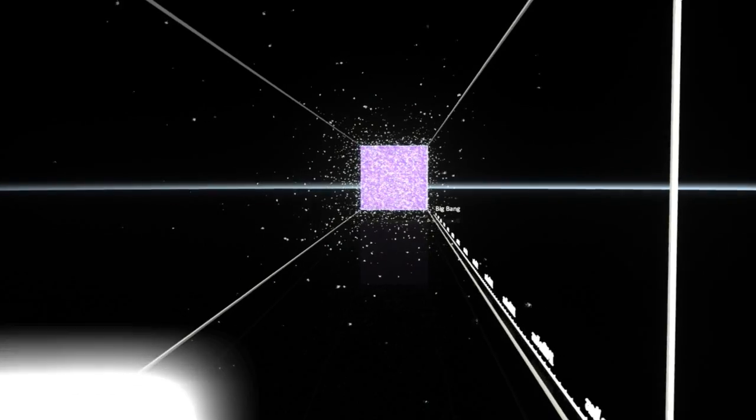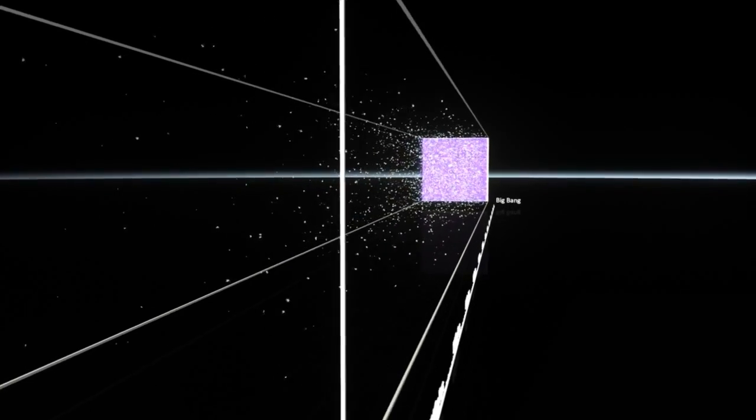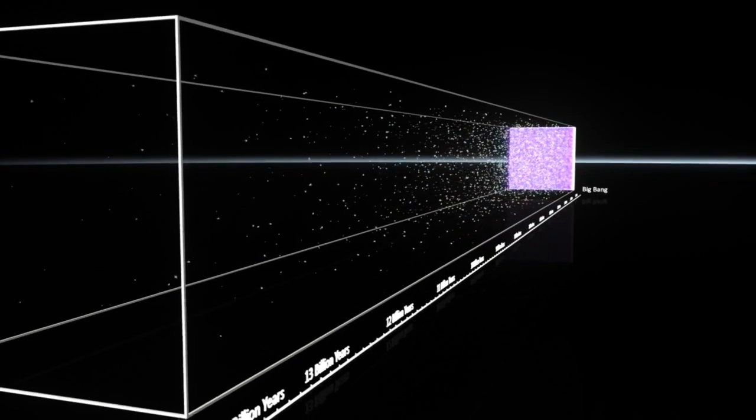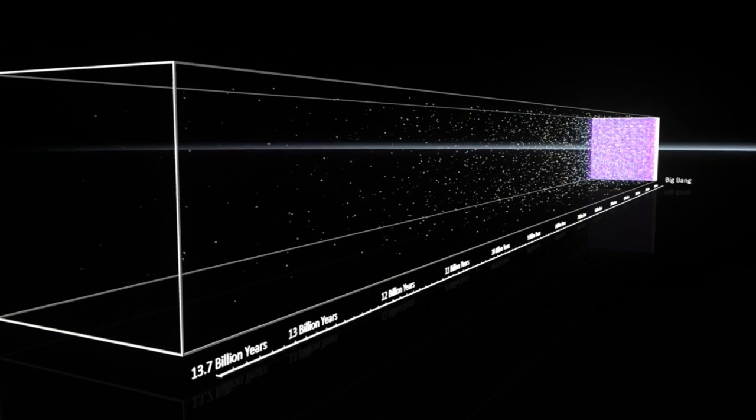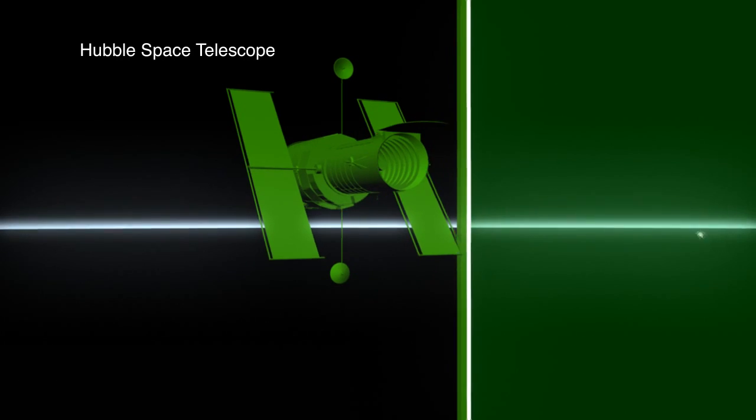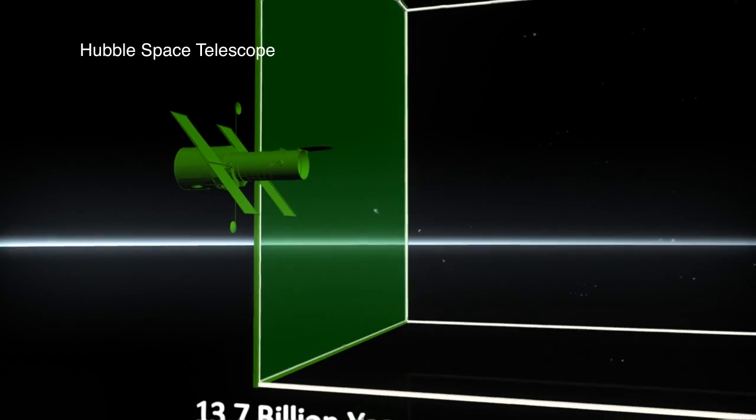The universe came into existence 13.7 billion years ago with the event known as the Big Bang. We have been able to see back close to the beginning using telescopes to capture distant light emitted billions of years ago.